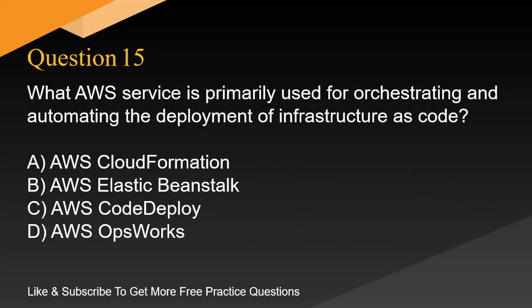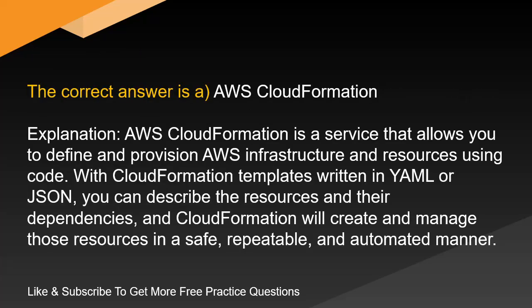Question 15. What AWS service is primarily used for orchestrating and automating the deployment of infrastructure as code? A. AWS CloudFormation. B. AWS Elastic Beanstalk. C. AWS CodeDeploy. D. AWS OpsWorks. The correct answer is A: AWS CloudFormation.